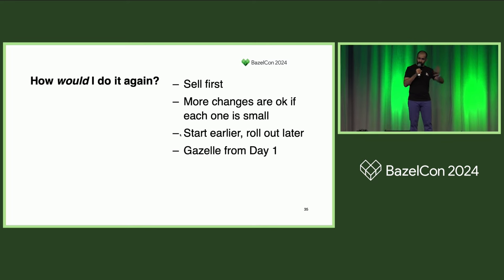And then Gazelle. Gazelle is amazing. People want help — not about build file syntax, but about where dependencies come from and how to format them. A tool like Gazelle that can crawl your build graph and auto-generate files makes it a lot easier. The people who were writing Go found it a lot easier to get up to speed than the people who were writing Kotlin.